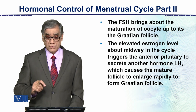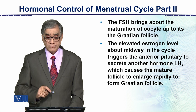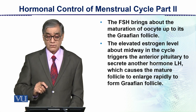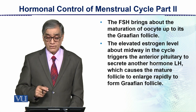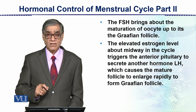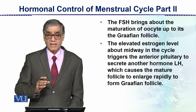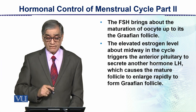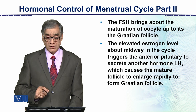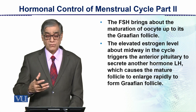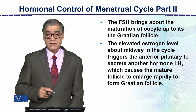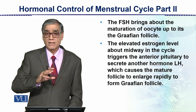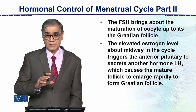The elevated estrogen level about midway through the cycle triggers the anterior pituitary to secrete another hormone, which is LH. So after FSH, LH starts increasing at the midway of the cycle, which causes the mature follicle to enlarge rapidly to form the graafian follicle.